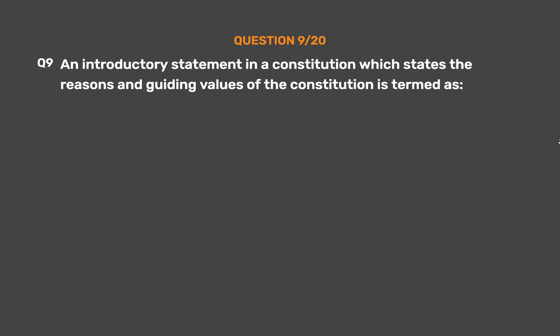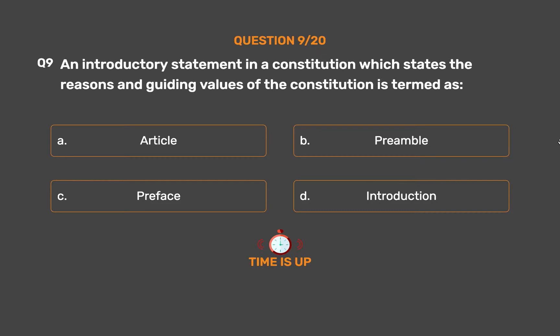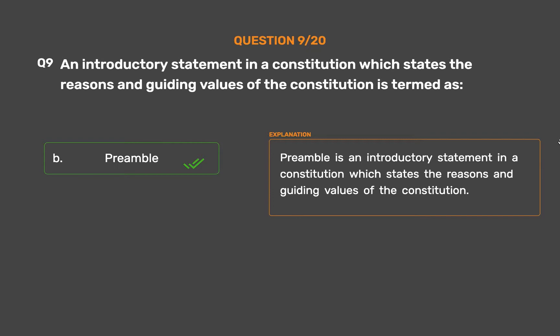Question 9: An introductory statement in a constitution which states the reasons and guiding values of the constitution is termed as. Option A: Article. Option B: Preamble. Option C: Preface. Option D: Introduction. The correct answer is Option B: Preamble. Preamble is an introductory statement in a constitution which states the reasons and guiding values of the constitution.